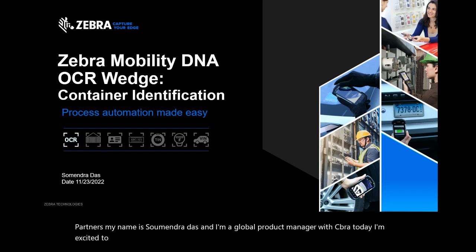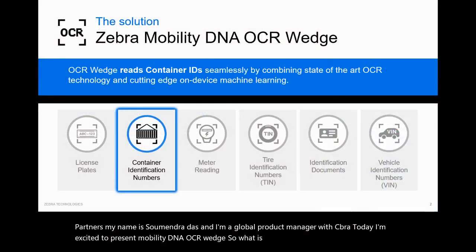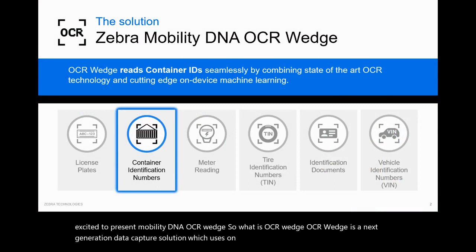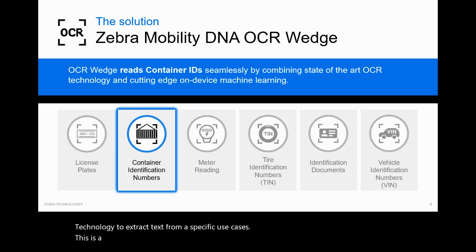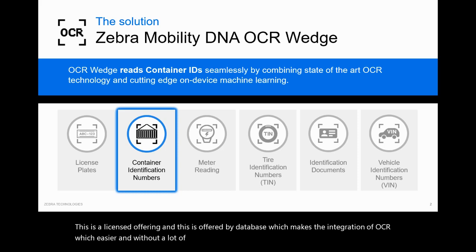So what is OCR Wedge? OCR Wedge is a next-generation data capture solution which uses on-device machine learning and OCR technology to extract text from specific use cases. This is a licensed offering and is offered with DataWedge, which makes the integration of OCR Wedge easier and without a lot of coding.